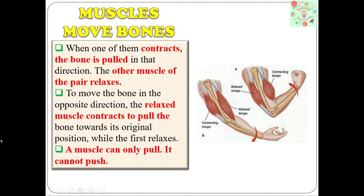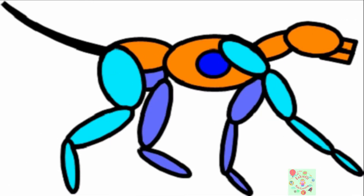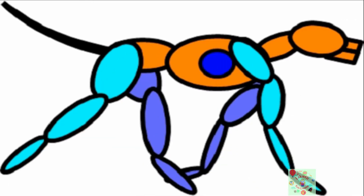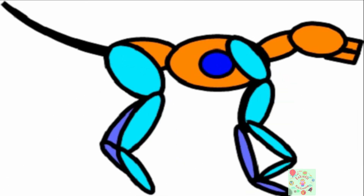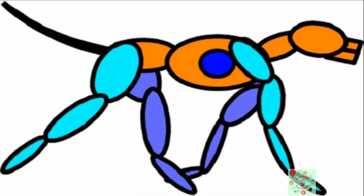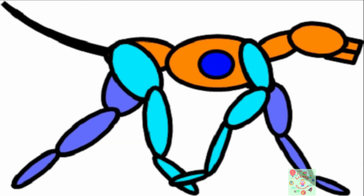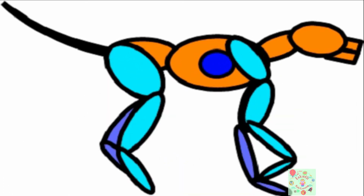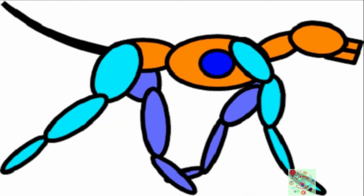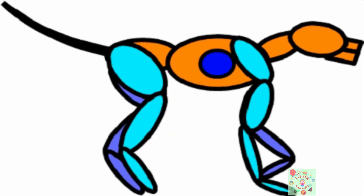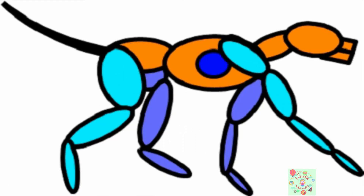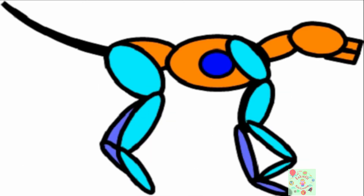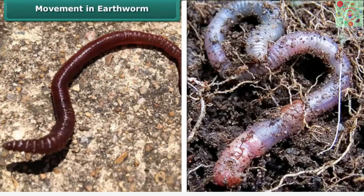A muscle can only pull — it cannot push. Now let's study the last topic from this chapter: the gait of animals. The gait of animals is the pattern of movement of the limbs of animals.